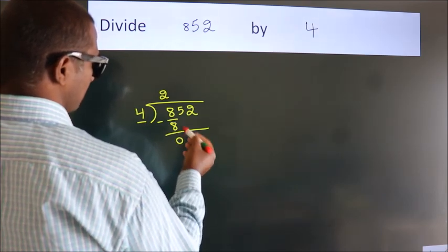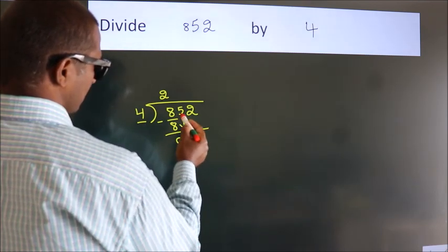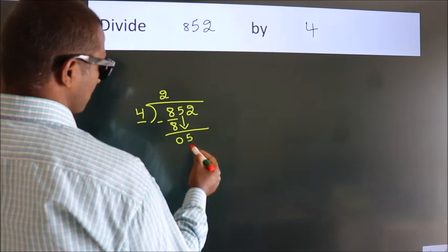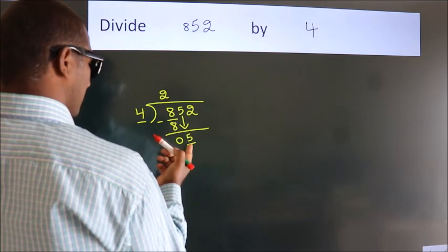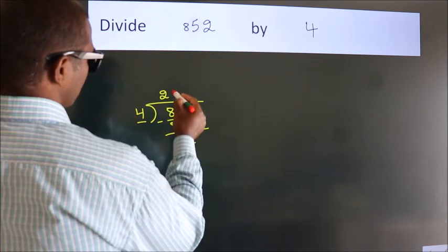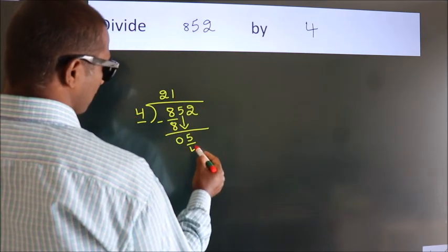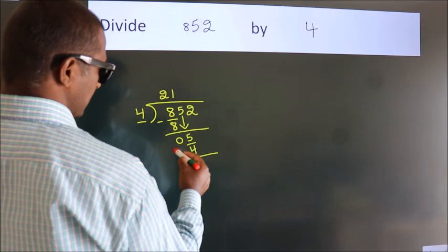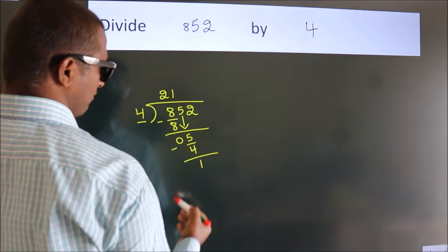After this, bring down the beside number. So, 5 down. So, 5. A number close to 5 in 4 table is 4 ones, 4. Now we subtract. We get 1.